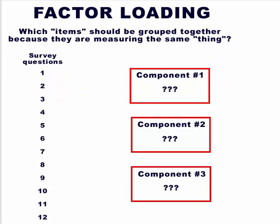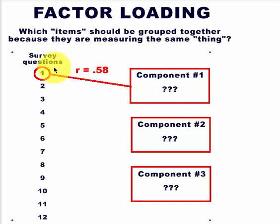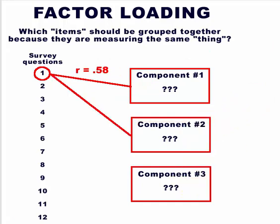Let's do one example. Take question one — we run a correlation between that question and the new component, which is made up of several other questions, and we get the correlation. The first correlation to component one is pretty high: 0.58. We do the same thing for component two and component three, running correlations between the individual item and each of the new components.